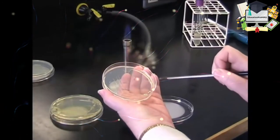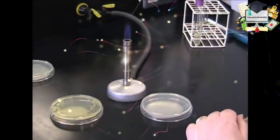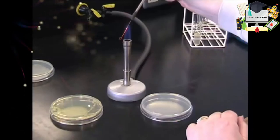Finish with a streak down the center of the plate. Replace the lid. And always finish by flaming your loop to avoid any contamination.